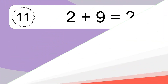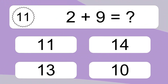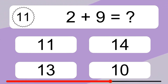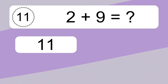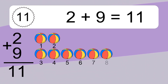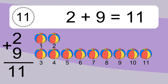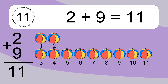2 plus 9 equals what? 2 plus 9 equals 11. Let's count it. 1, 2, 3, 4, 5, 6, 7, 8, 9, 10, 11.